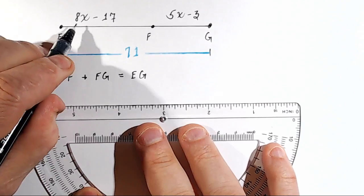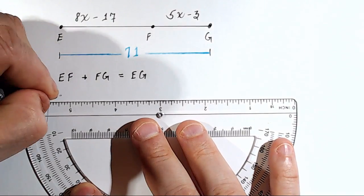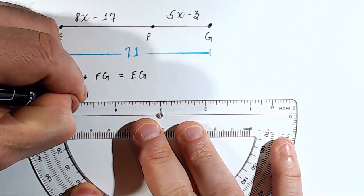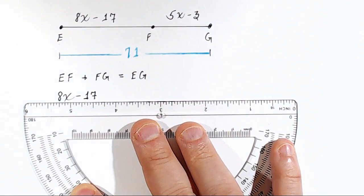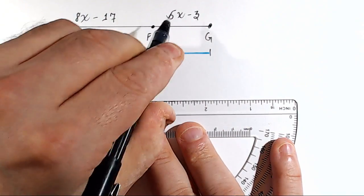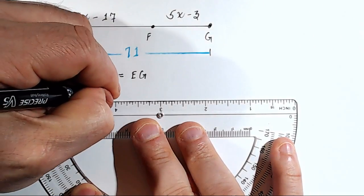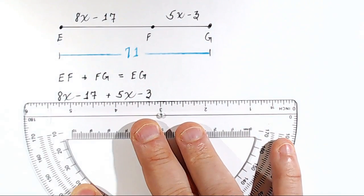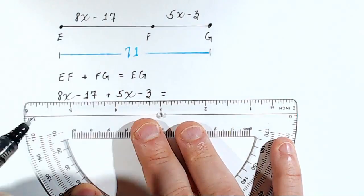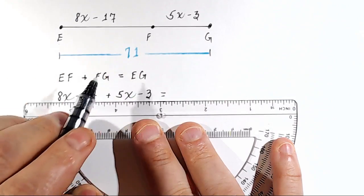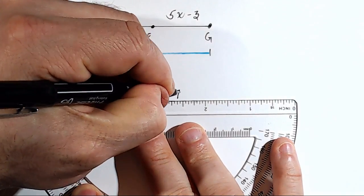Now we actually have to substitute in values. For EF, we're going to use 8X minus 17 because that's what we're given. So: 8X minus 17 plus 5X minus 3 equals the whole distance, which is 71.